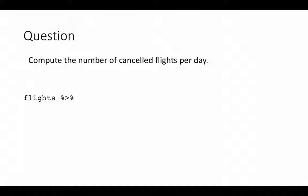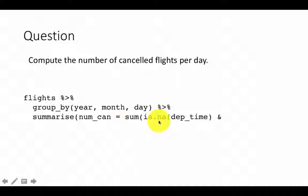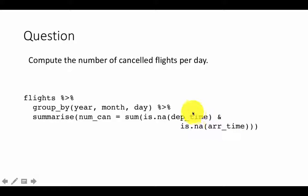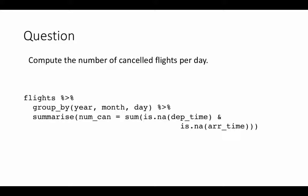Compute the number of cancelled flights per day. We take flights, pipe it to `group_by(year, month, day)`, then `summarize()`. We treat a flight as cancelled if departure time is NA — or using both departure and arrival time being NA. Either way the result is a boolean true/false, and we just sum it. Adding trues and falses — true is 1, false is 0 — gives us the total number of flights for which the condition is true, which is the number of cancelled flights.